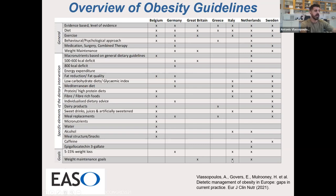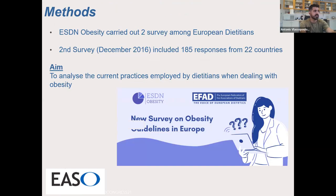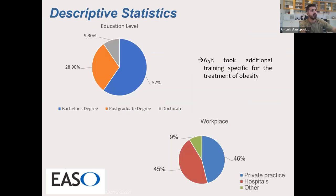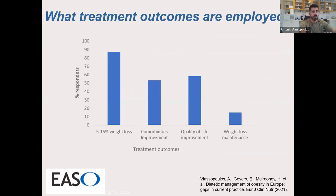Dietitians reflected those guidelines in their practice. We carried out an analysis to see what current practices are employed by dietitians when dealing with obesity. We received 195 responses from 22 countries and saw that most dietitians are very well trained — a good proportion have postgraduate and doctoral degrees. In Europe generally, private practices and hospitals are the main areas where dietitians are employed. Although the guidelines do not all state an explicit weight loss goal, the majority of dietitians did follow a specific weight loss goal of five to fifteen percent with personalization.